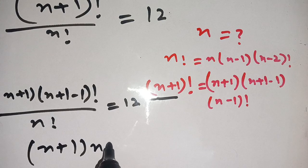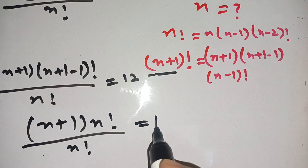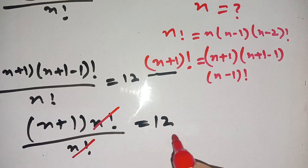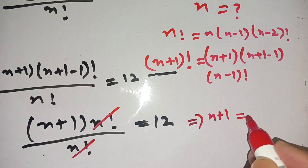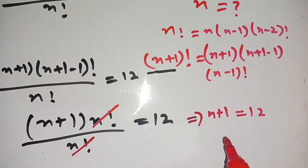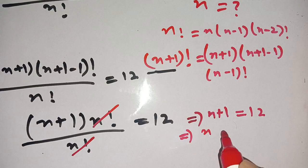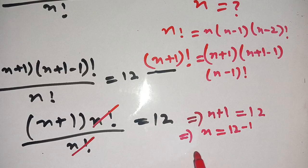On the next step we get (n+1) times n! divided by n! is equal to 12. Now we can cancel out n! by n!, and we get n+1 = 12. On subtracting 1 from both sides we get n = 12 − 1, which gives n = 11.